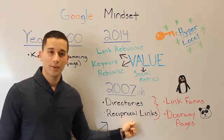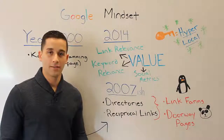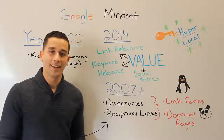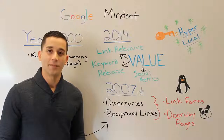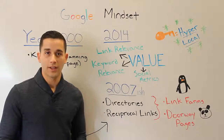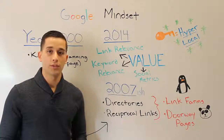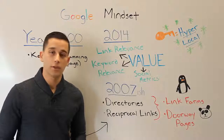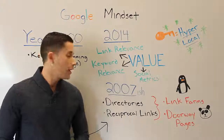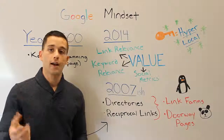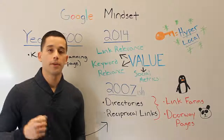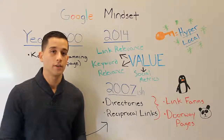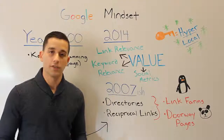You also had reciprocal links. The white hat way of getting them was to contact related individuals in your industry — mortgage guys, insurance guys, other real estate agents — and say, 'I'll put your link on my website, you put mine on yours.' Everyone wins; Google sees a bunch of votes of confidence.